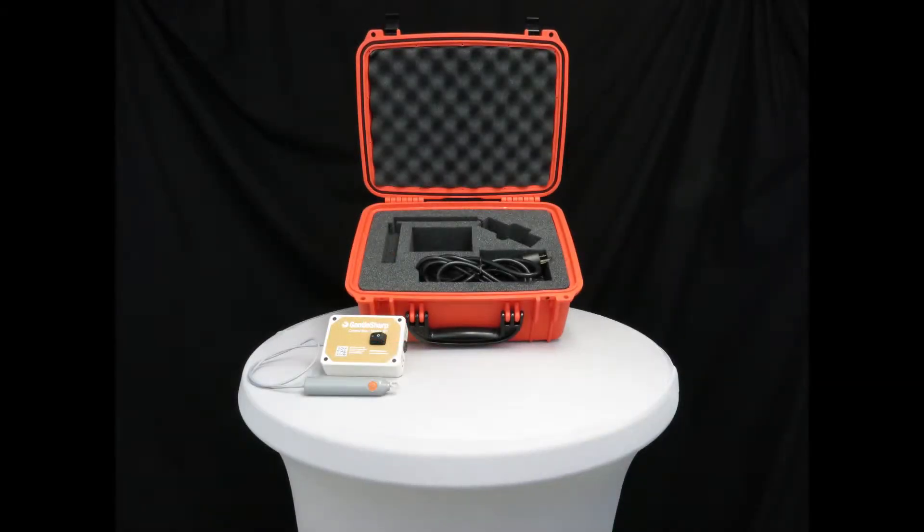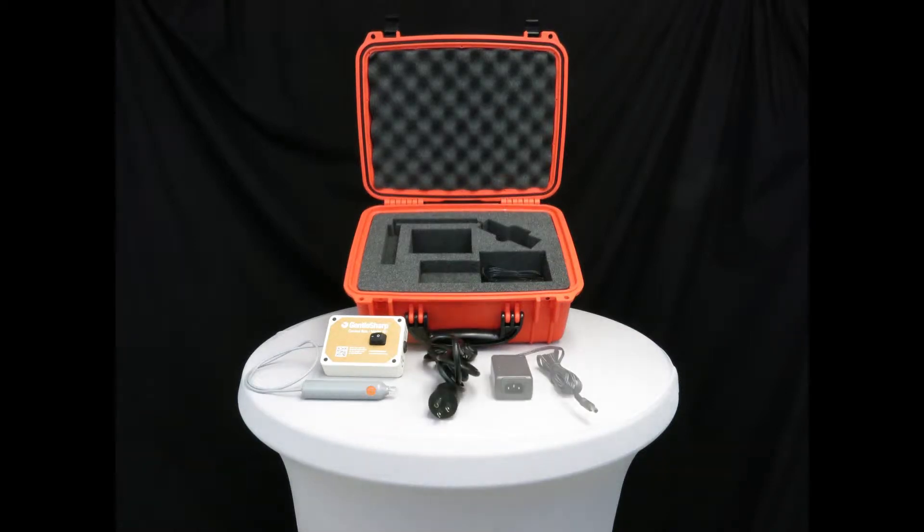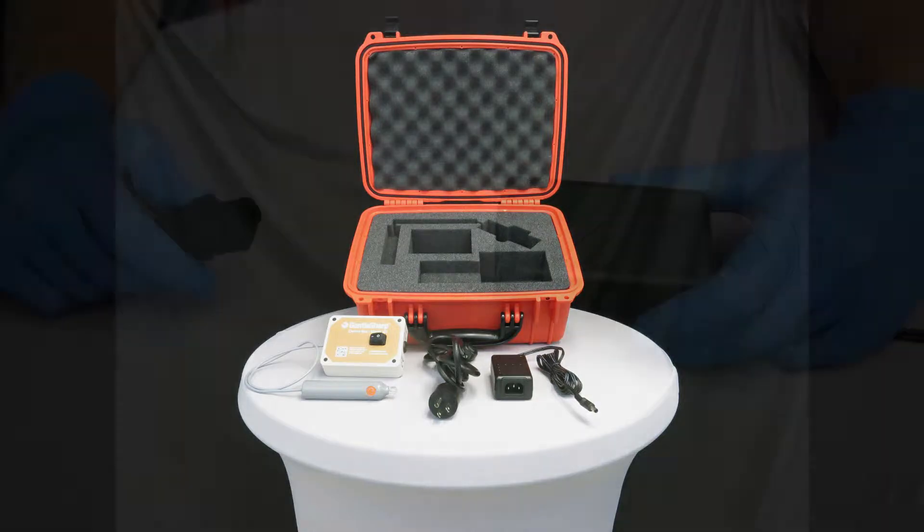Remove the control box and handpiece from the case. Place the control box and handpiece on a sturdy level surface such as a table. This reduces the risk of the control box or handpiece falling. Remove the power cord, power supply, and power supply cord from the case.